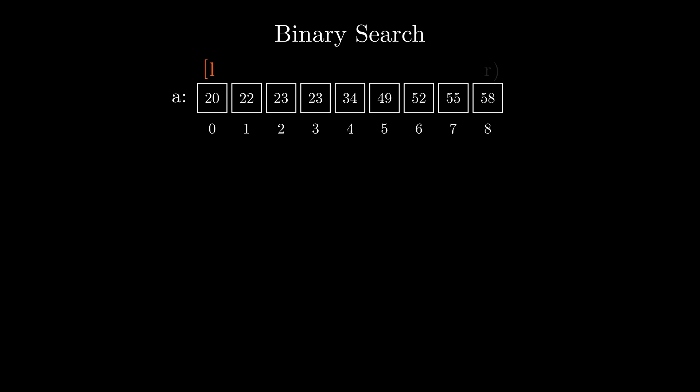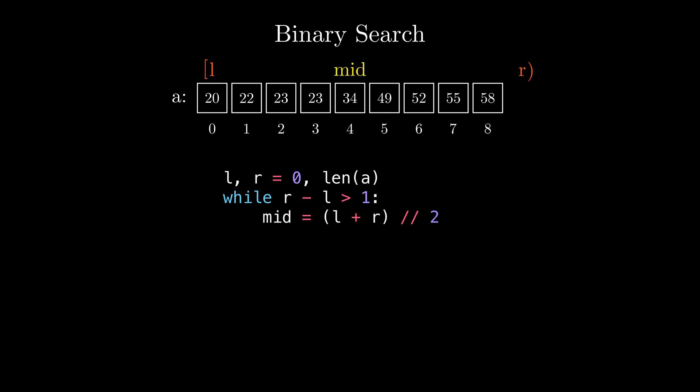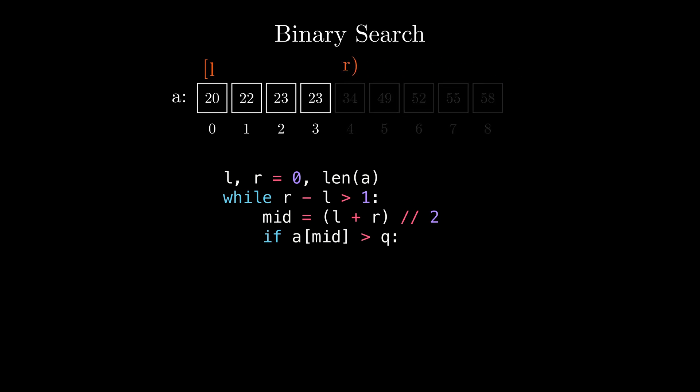So when initializing, we will set the left endpoint to 0 and the right one to be the array length. After that, we will start splitting the search space in half and discard unnecessary parts. So while there is at least one element in between L and R to consider, we will continue looping. We will take the midpoint index and round it down in case the sum of left and right is odd, after which we will compare if the middle element is larger than the query number. If it is, we will throw away the whole right part of the array and assign R to mid.